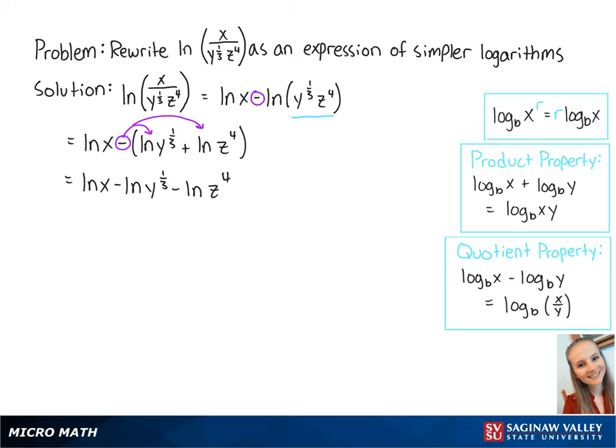Now we're going to use this final property to bring down these exponents. So now we have the ln of x minus 1/3rd times the ln of y minus 4 times the ln of z. This is the final answer.